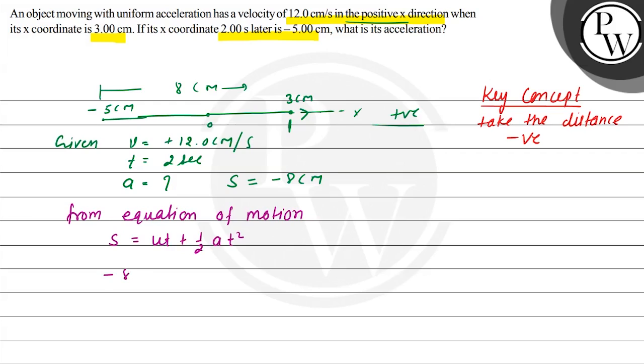Minus 8 equals u, which is 12, times t, which is 2, plus one-half times acceleration (which we have to find) times 2 squared.